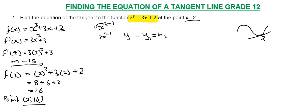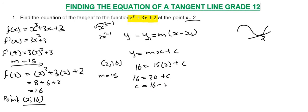The equation is y minus y₁ equals m times (x minus x₁), or y equals mx plus c. Now substitute: y equals 16, so 16 equals 15 times 2 plus c. c equals 16 minus 30, which is negative 14.